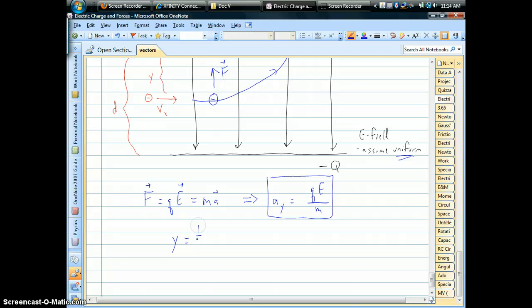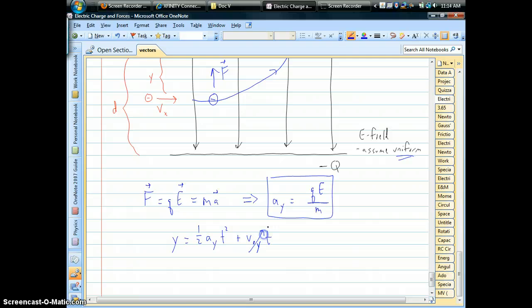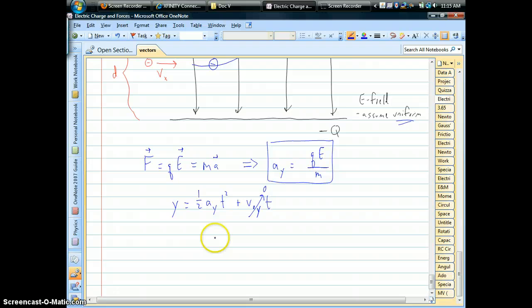So that distance is going to be one half, like the acceleration, multiplied by time squared. There's also an initial speed. In this case, we don't have to worry about it. There is no initial Y velocity. And so this allows us to figure out the time it takes before it crashes into that top plate.